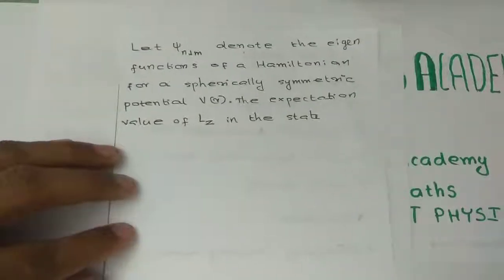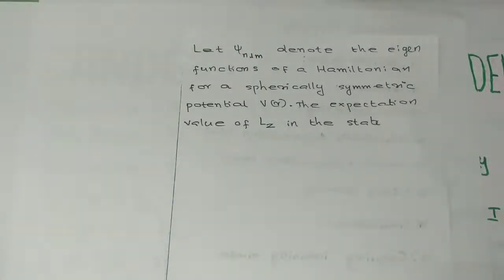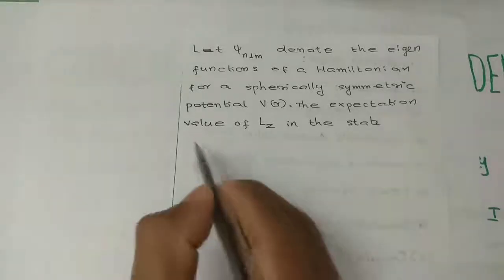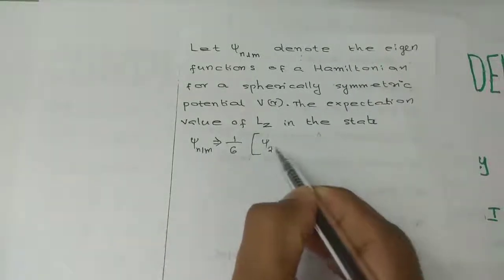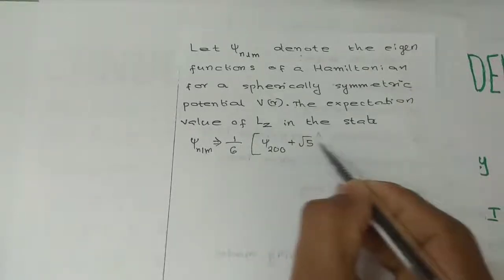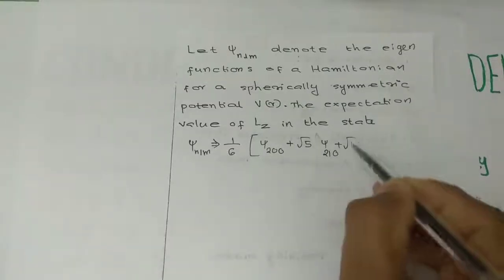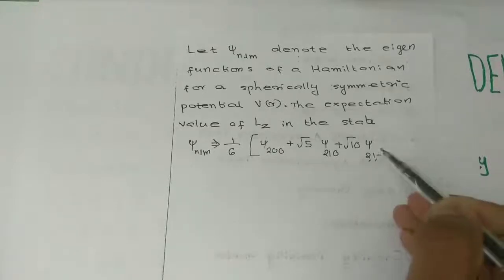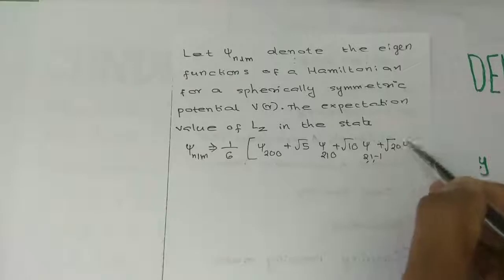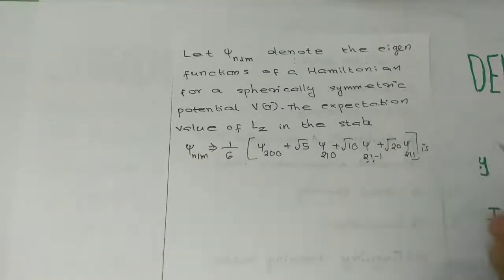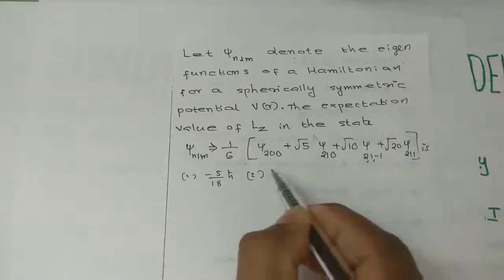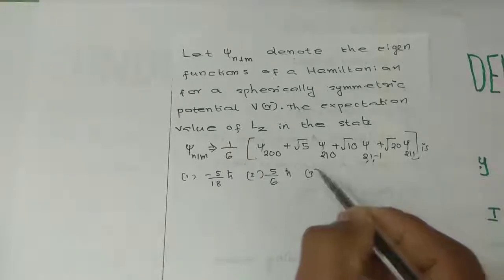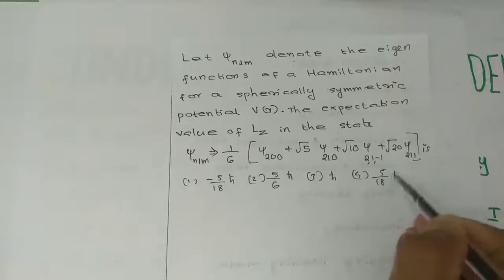Next problem: Let psi-n-l-m denote the eigenfunctions of the Hamiltonian for a spherically symmetric potential V of r. The expectation value of Lz in the state psi equals 1 over 6 times psi-200 plus root 5 times psi-210 plus root 10 times psi-2-1-minus-1 plus root 20 times psi-211. Options are: minus 5 by 18 h-bar, 5 by 6 h-bar, h-bar, or 5 by 18 h-bar.